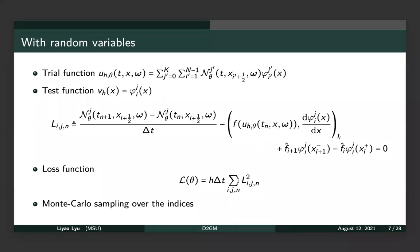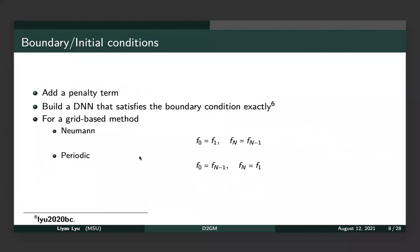We don't need to evaluate all i, j, n combinations; in each iteration we can do multi-color sampling over these indices, so it does not cost much computational resources. Apart from the PDE, we also need to deal with the initial condition and the boundary condition.